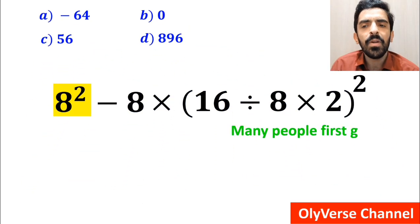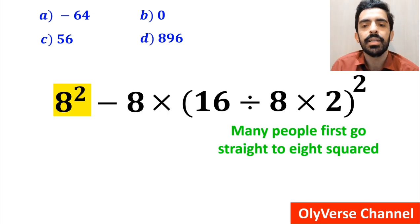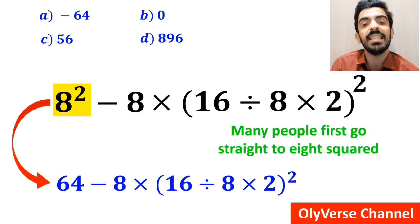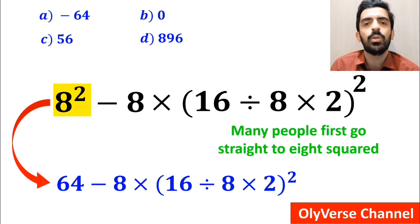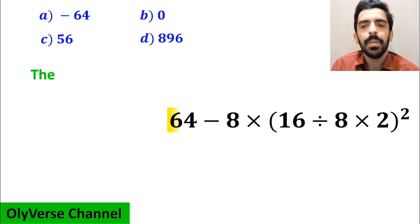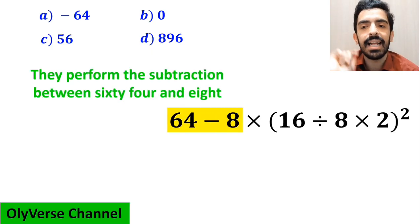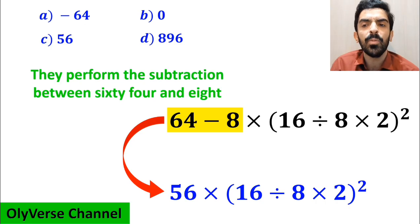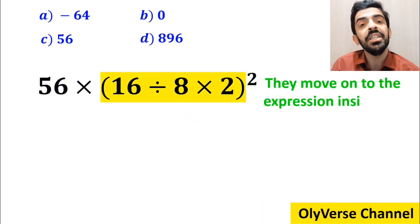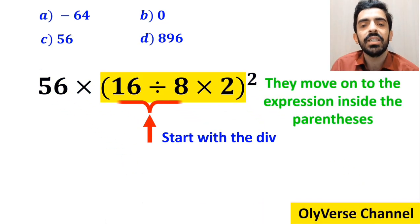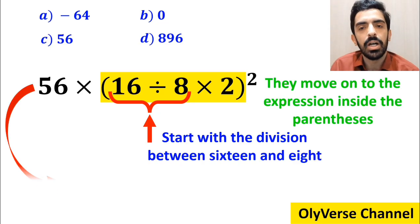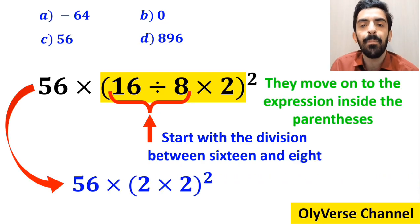To solve this question, many people first go straight to 8 squared and simplify this expression to 64 minus 8 multiplied by 16 divided by 8 times 2 inside the parenthesis and all squared. In the next step, they perform the subtraction between 64 and 8, rewriting the expression as 56 multiplied by 16 divided by 8 times 2 inside the parenthesis and all squared. Then they move on to the expression inside the parenthesis and start with the division between 16 and 8, simplifying to 56 multiplied by 2 times 2 inside the parenthesis and all squared.